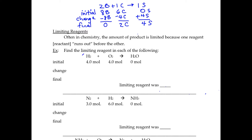So the first thing we're going to do is balance it: two H₂, one O₂, two H₂O. We're going to bridge from each one to see which is going to run out first. Starting with hydrogen: four divided by two is two, times two is four — so we can make four moles of water with the hydrogen. Now for oxygen: four divided by one is four, times two is eight — so we could make eight moles with that one. Clearly the one that runs out is the hydrogen.